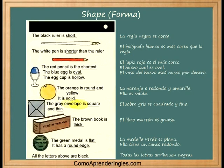The gray envelope is square and thin. The brown book is thick. The green metal is flat and has a round edge. All the letters above are black.